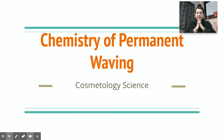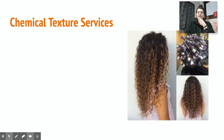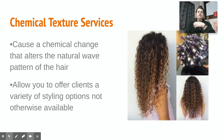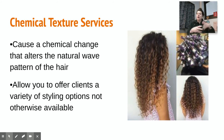Hello, this is a video where we're going to talk about the chemistry of permanent waving. The first thing we need to realize is that using chemicals to alter the shape of hair is ultimately a chemical texture service, because you're using chemicals and you're changing the texture of hair.